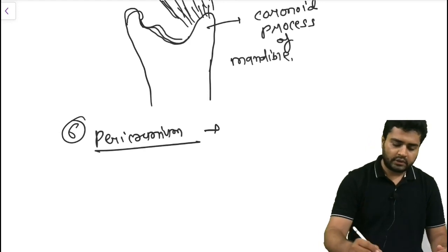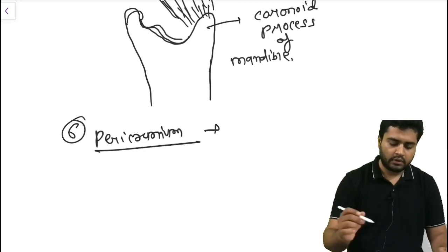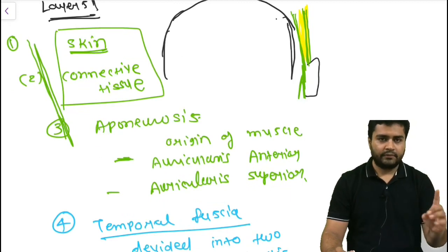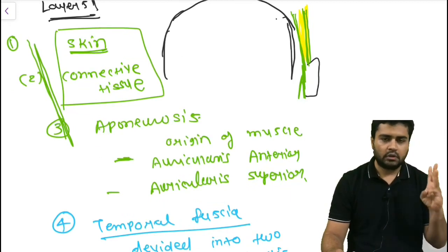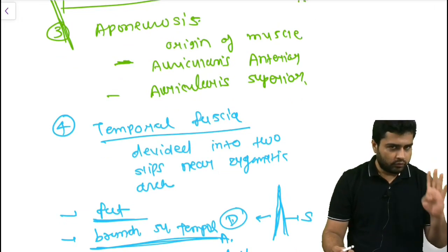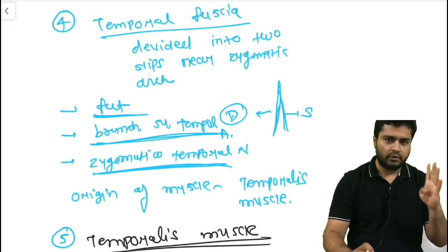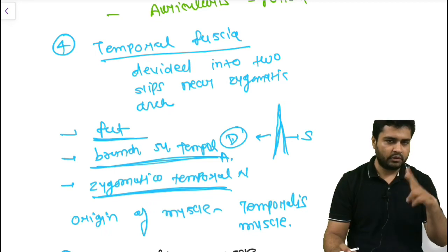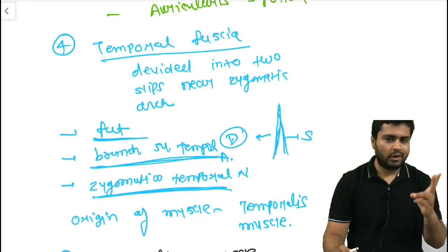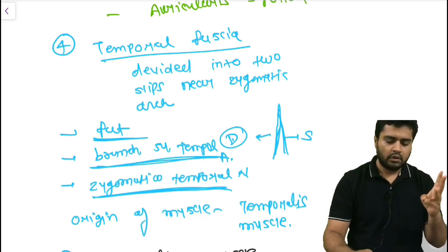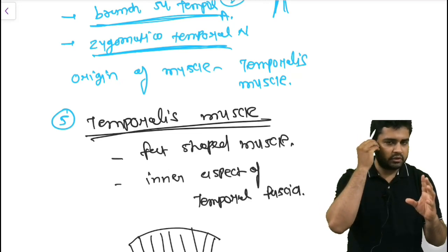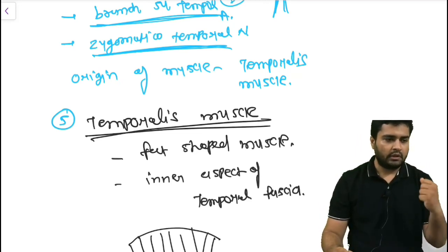Let's revise the six layers: first, skin; second, connective tissue; third, epicranial aponeurosis — difference here is it gives origin to auricularis anterior and auricularis superior; fourth, temporal fascia — at the lower part it has two divisions, superficial and deep, with the space containing fat, a superficial branch of the superficial temporal artery, and the zygomaticotemporal nerve; fifth, the temporalis muscle — fan-shaped, fibers inserted onto the coronoid process of the mandible; sixth, the pericranium.